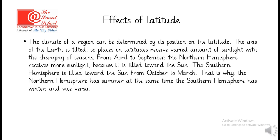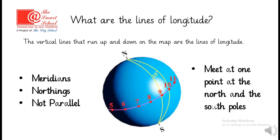Now let's discuss what are longitudes. The vertical lines that run up and down on the map are the lines of longitude, from north to south. These are the lines of longitudes. They are also called meridians, and they are also called northings. They are not parallel — you can see these lines are not parallel like the lines of latitude. They meet at one point in north and in south, at the north and south poles.